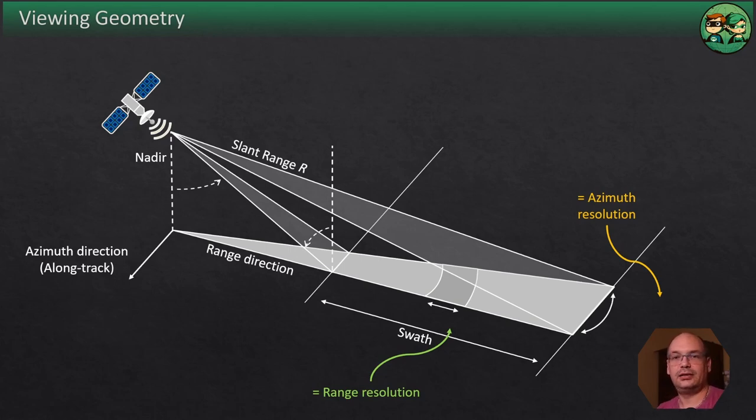The angle thetaL is the angle at which the radar observes the earth, also called look angle. The angle between the radar beam and the ground surface is named incident angle thetaI. This observation geometry is typical for imaging radar systems.